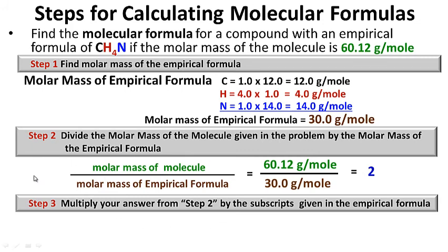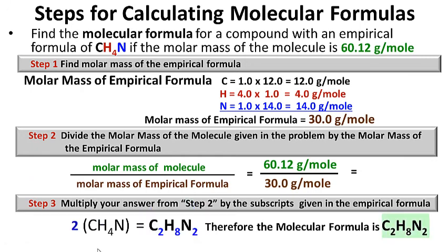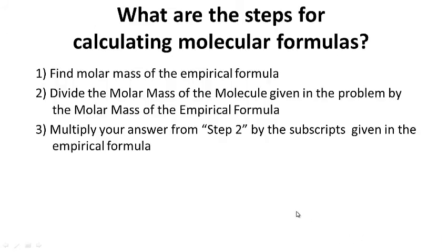Step three: multiply your answer from step two by the subscripts in the empirical formula. Multiply CH4N by 2: 1×2=2 carbons, 4×2=8 hydrogens, 1×2=2 nitrogens. Therefore the molecular formula is C2H8N2. For your notes: what are the steps for calculating molecular formulas? Question on the left, answer on the right. Pause while you write.